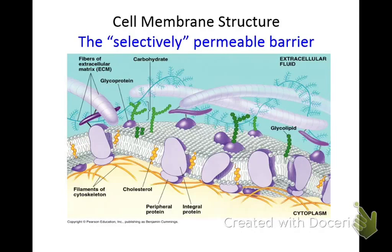The membrane also helps regulate homeostasis. Homeo means same — that stable environment. You want to have water inside and outside the cell equally. So where it says homeostasis, you want to know that word regulate. Regulate homeostasis, which is that stable environment.